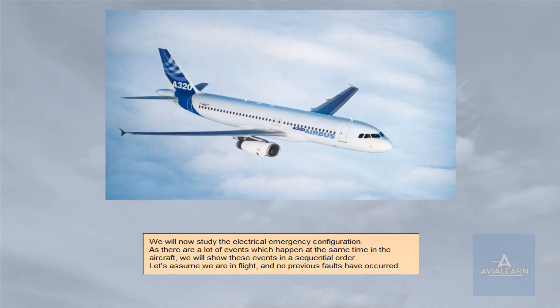We will now study the electrical emergency configuration. As there are a lot of events which happen at the same time in the aircraft, we will show these events in a sequential order. Let's assume we are in flight and no previous faults have occurred.